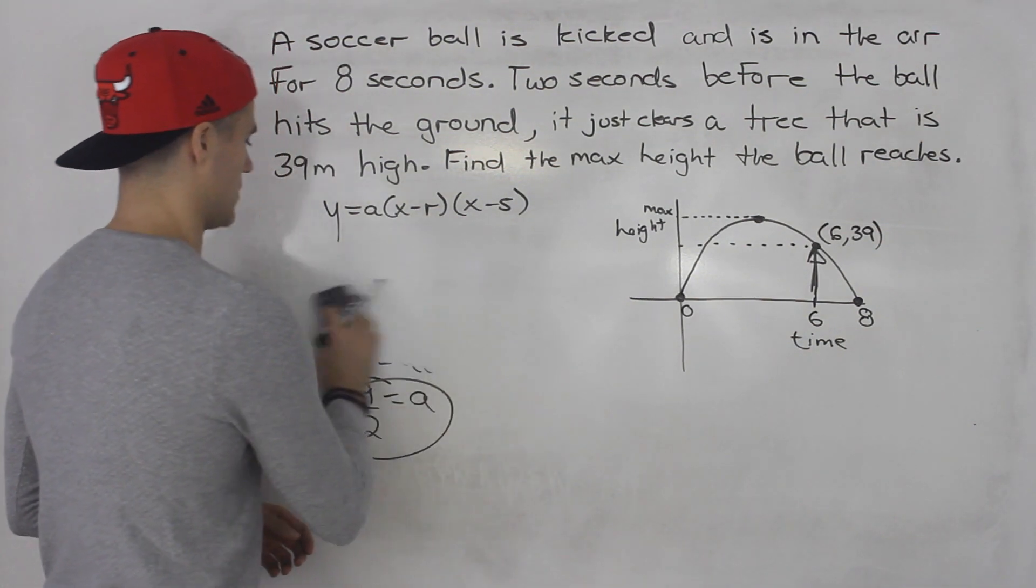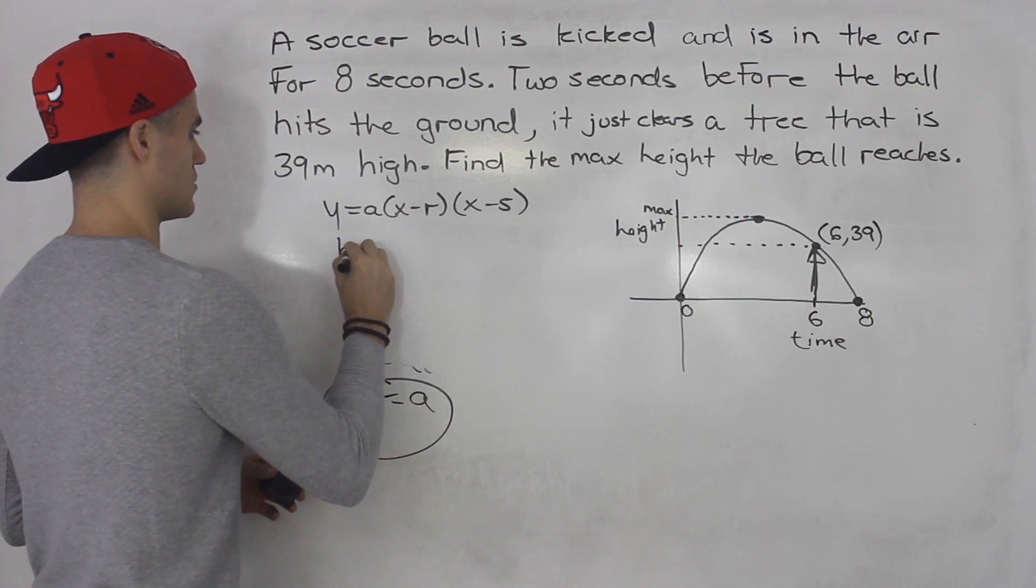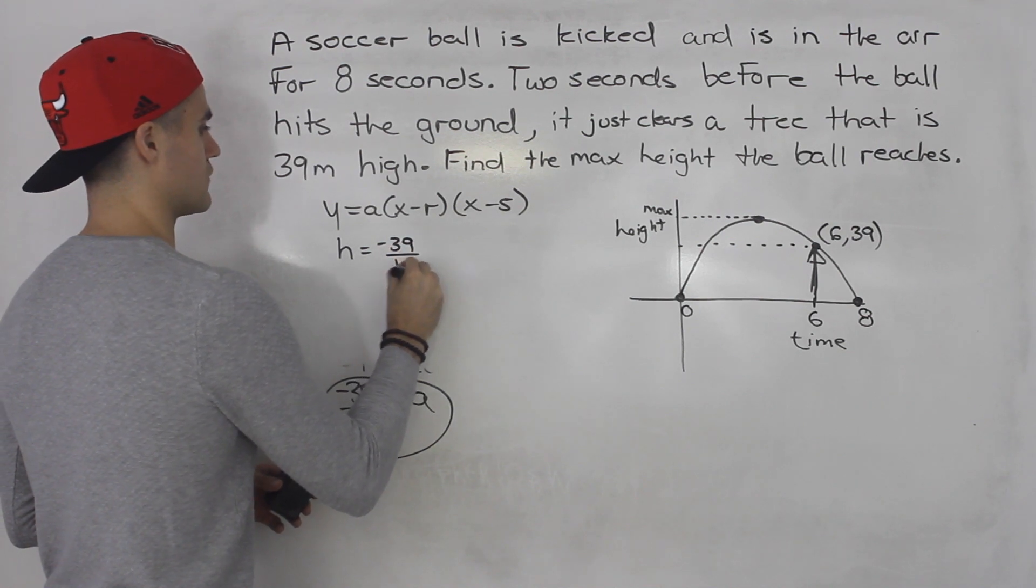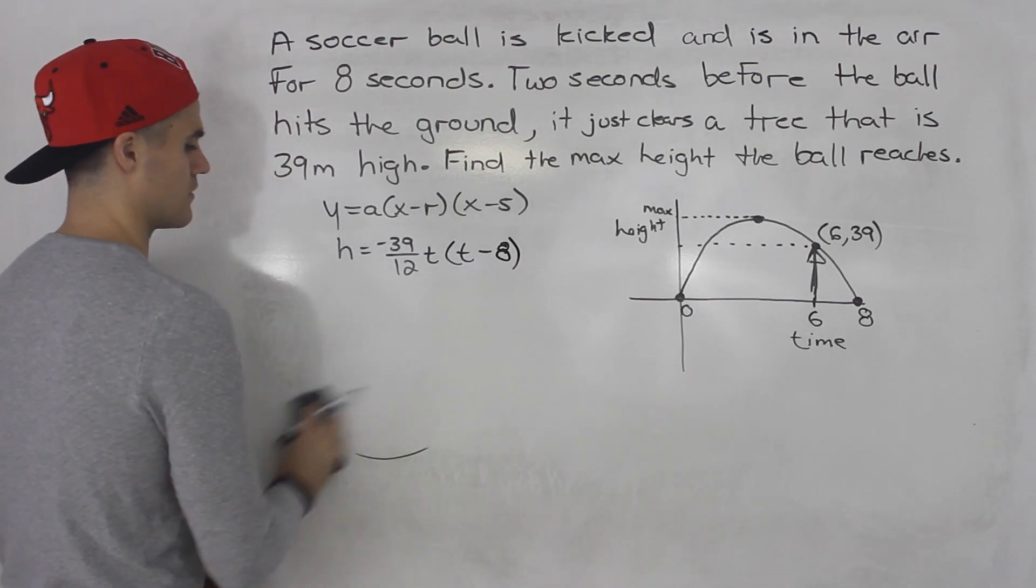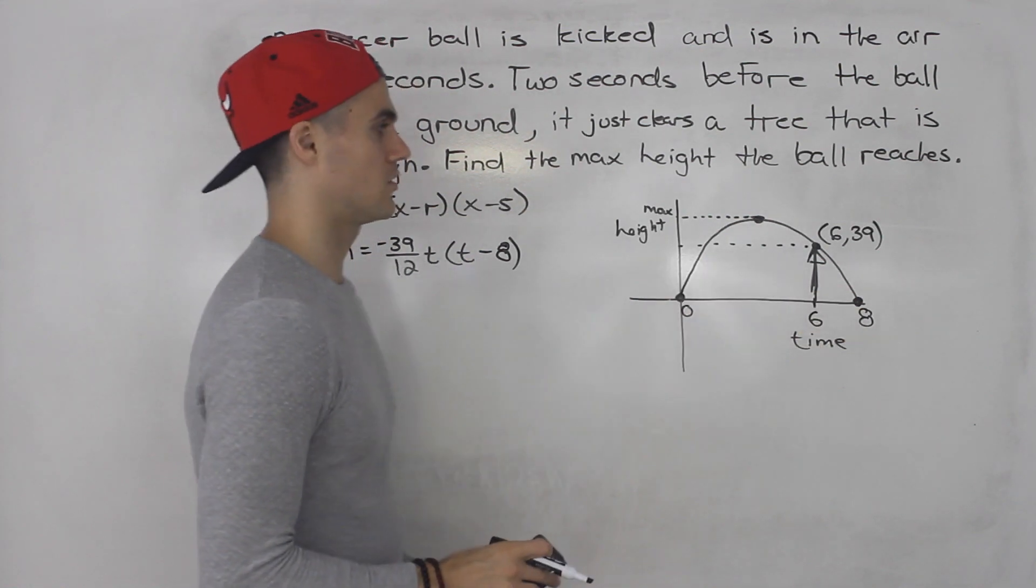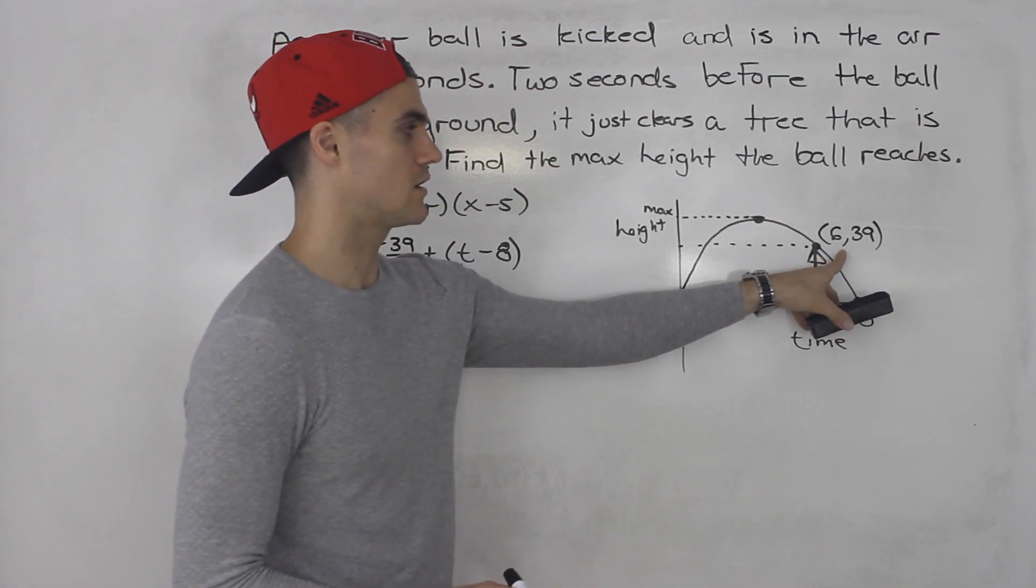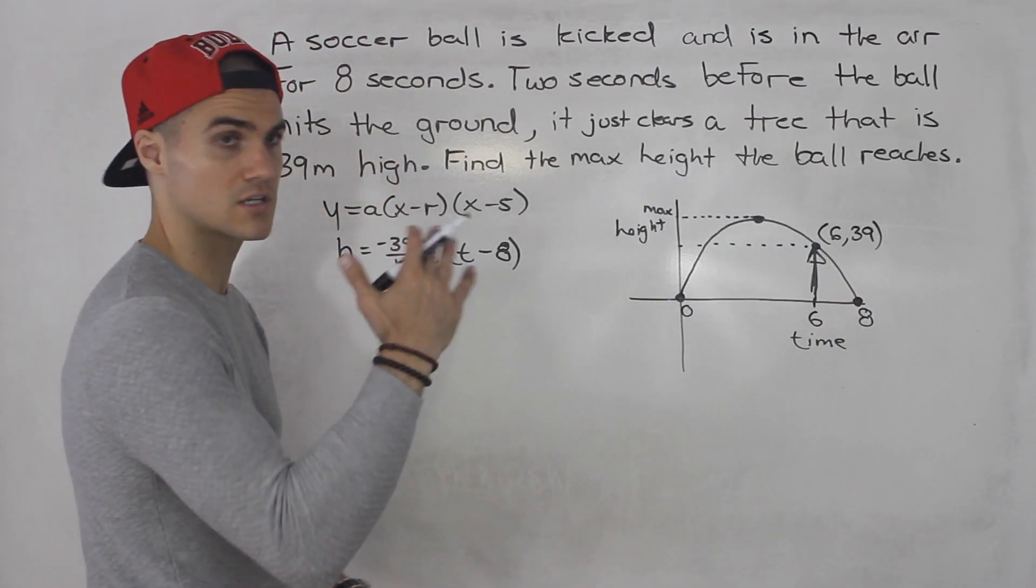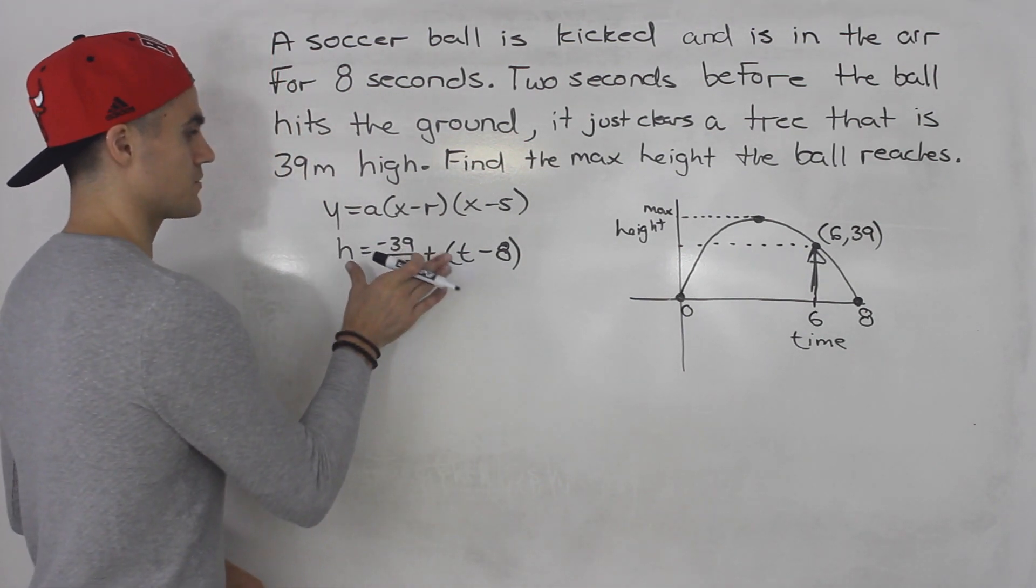So up here, we would have h equals negative 39 over 12, t, t minus eight. This equation here models this soccer ball being kicked. So really the trick was getting this coordinate here. Two seconds before it hits the ground, reaches a height of 39. It just clears a 39 meter high tree. Okay, so we have the equation.